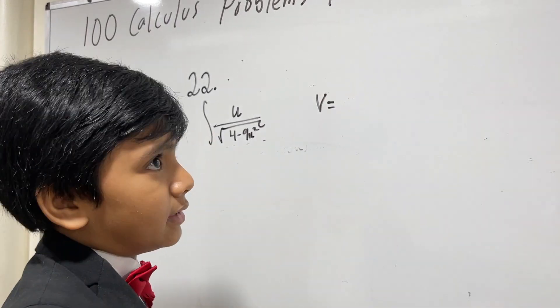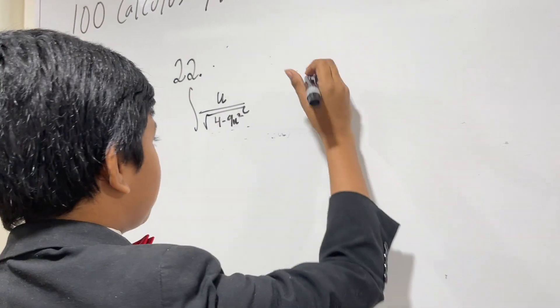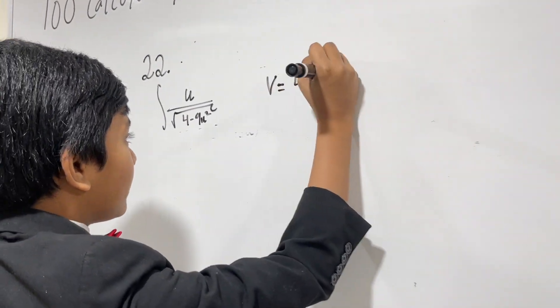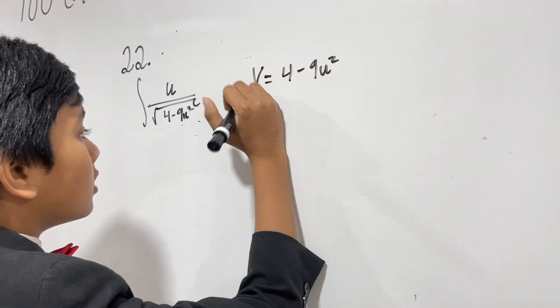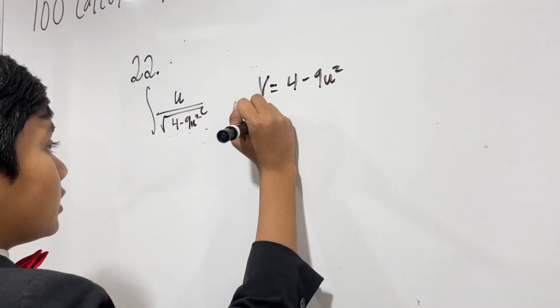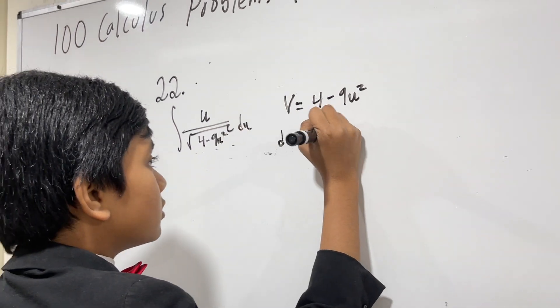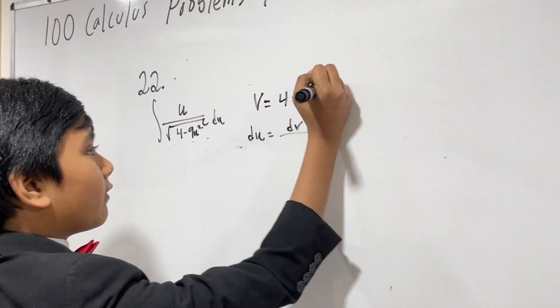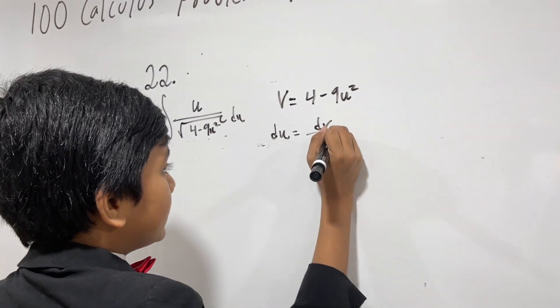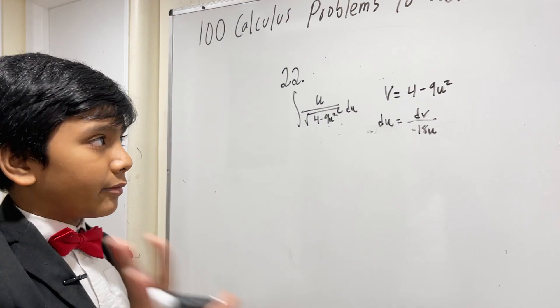What does that mean? Well, it's the same thing as a u sub, but the letter is already u, so let's call it a v sub instead. So, v is 4 minus 9u squared. So, that means that, well, let's use the trick that we learned earlier, du is equal to dv over the derivative of this, using the power of minus 18u. If you don't get it, go back to when we saw problem number 5.